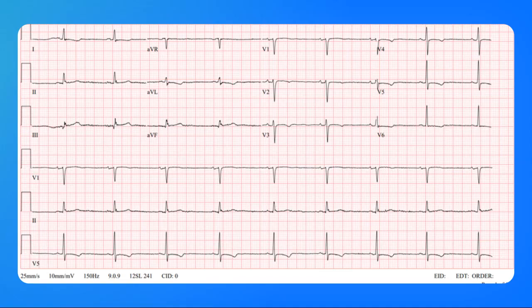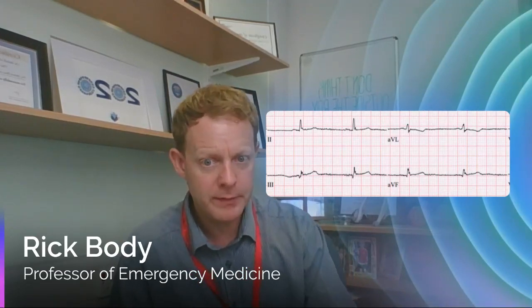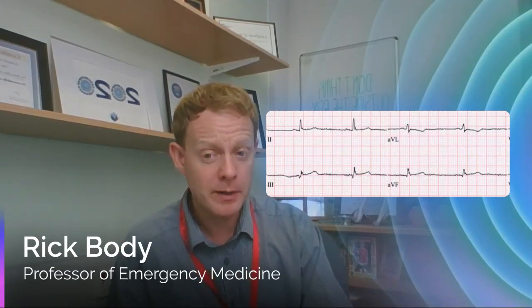Now, some of you will have noticed it, and some of you may not have noticed the inferior STEMI. So let's go through the leads, focusing in to see why that is an inferior STEMI. Let's focus in on leads 2, 3, AVF and AVL — that's where we want to look for our inferior STEMI predominantly.